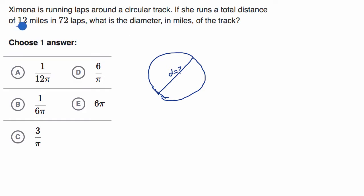They give us some other information. She runs a total of 12 miles in 72 laps. So we should be able to use this to figure out what is the circumference of the circle. The circumference of the circle would be how many miles she runs in one lap. So if we're able to figure out the circumference of the circle, then we could figure out the diameter from that. How do we do that? Well, you might remember that circumference is equal to the number pi times the diameter.